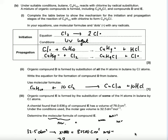In your equations, butane C4H10 reacts with chlorine by radical substitution. A mixture of organic compounds is formed, including C4H9Cl and compounds D and E. Complete the table below to show the mechanism for the initiation and propagation stages of the reaction of C4H10 with chlorine to form C4H9Cl. In your equations, use molecular formula with dots with any radicals.